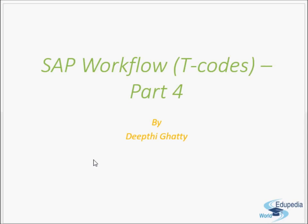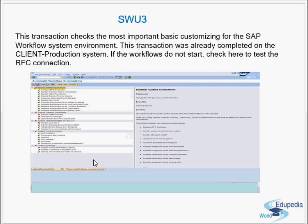The first one is SWU3. This transaction checks the most important basic customizing for the SAP Workflow system environment. This transaction should be executed on a production environment after go-live, before the workflows start running in the system. If the workflows do not start, check here to test the RFC connection.